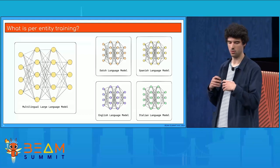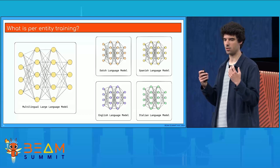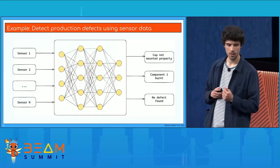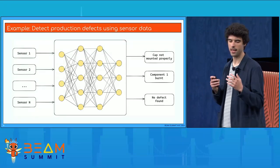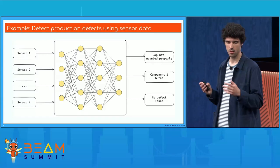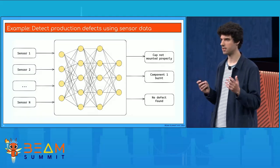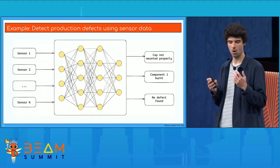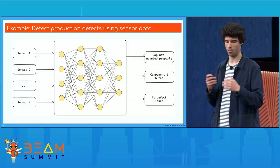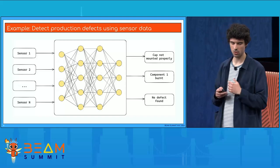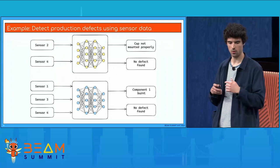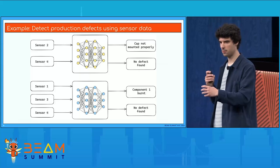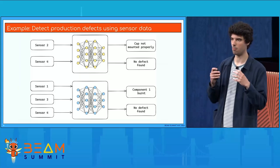Another example would be detecting defects in a manufacturing plant where you have lots of sensors and cameras. You could train a single really big model able to detect all kinds of defects and problems with your products using all the sensor data. Or you could go for a per-entity approach where you take a couple of sensors that detect specific problems, and you can then go for a much simpler model.